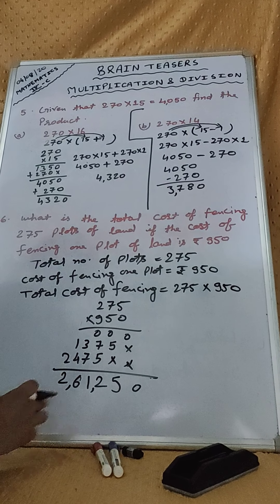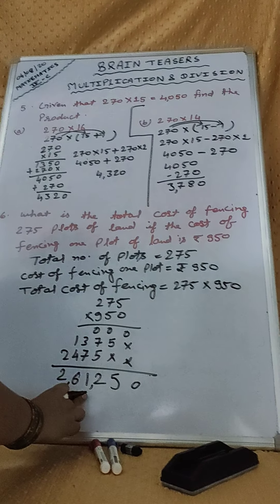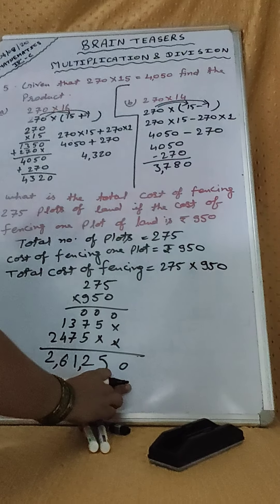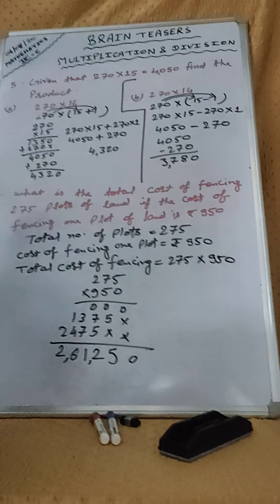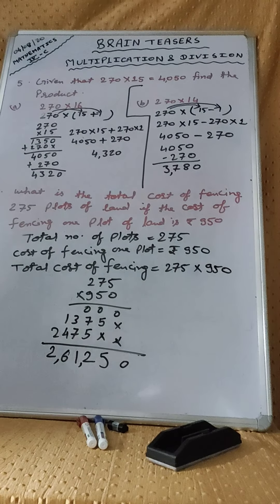Answer is 2,61,250 rupees is the total cost of fencing 275 plots.